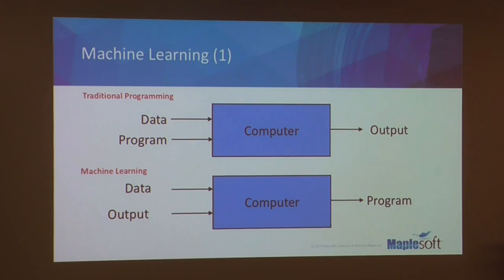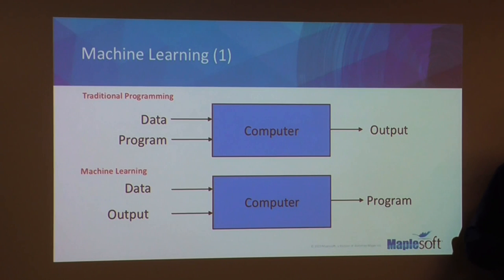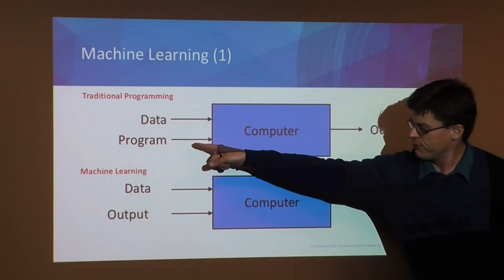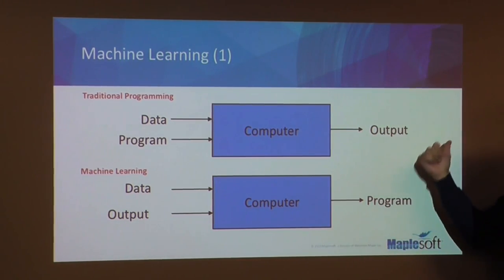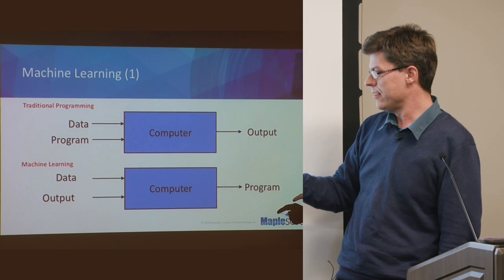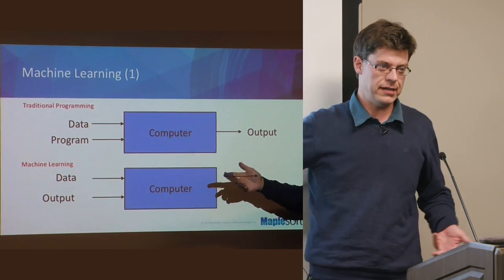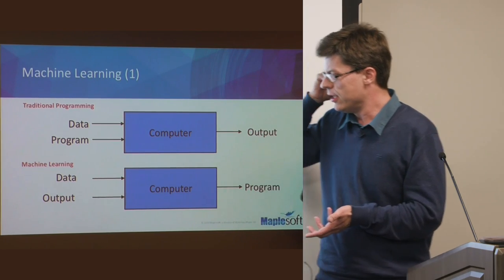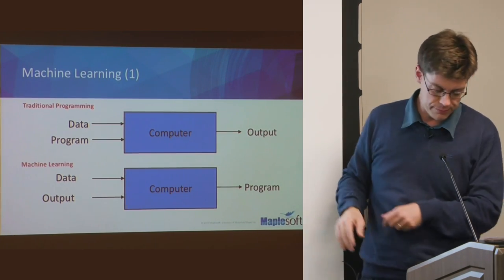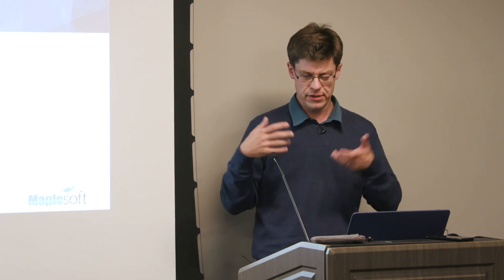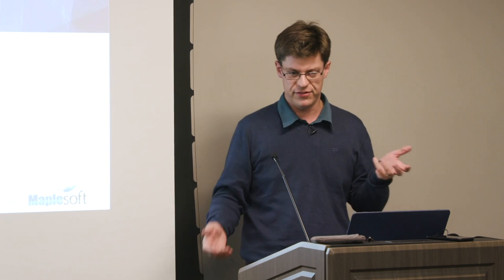Before I get into deep learning I should first talk about what machine learning is — I apologize for those for whom this is extremely basic knowledge — but I'll give a very quick run-through for those for whom this is a relatively new subject. In the traditional model, a program is crafted, data goes in, it is processed by a computer, and output is generated. In machine learning, the program is in fact generated from the data that's been acquired. So the computer is really learning itself.